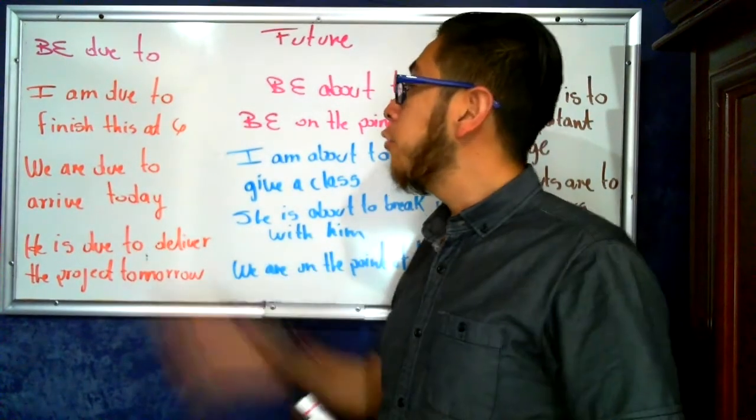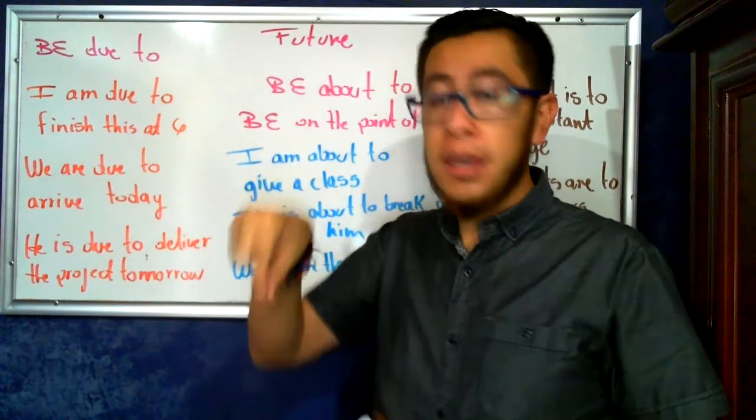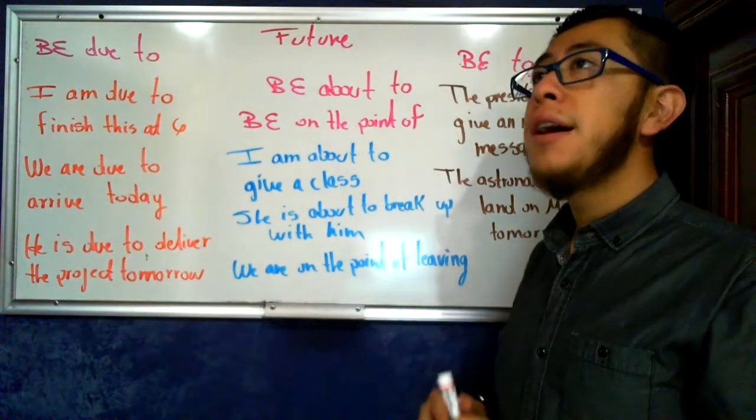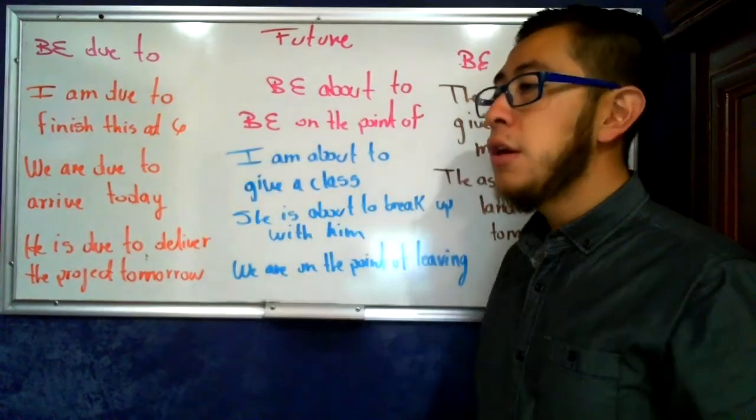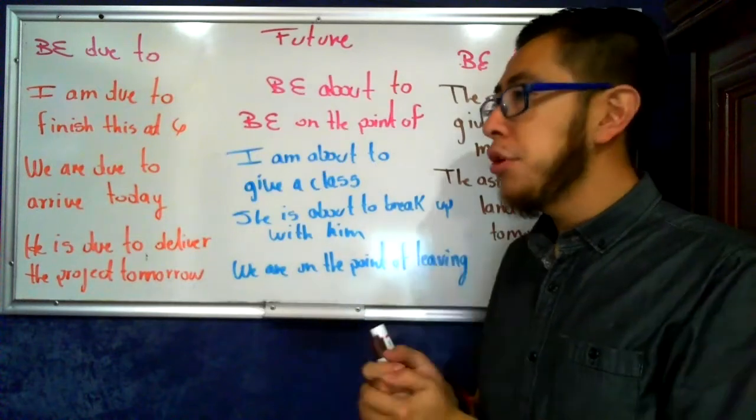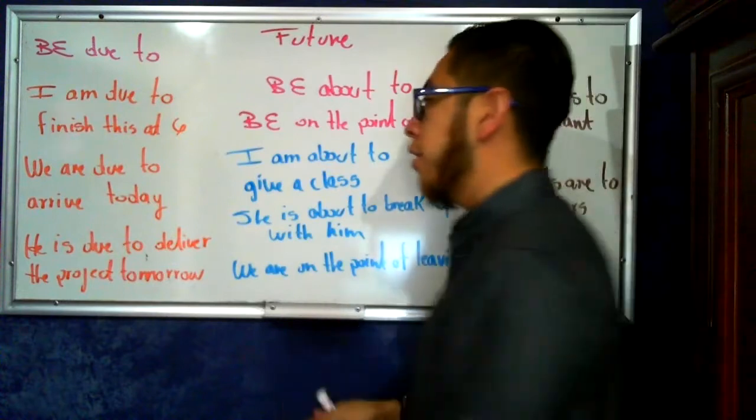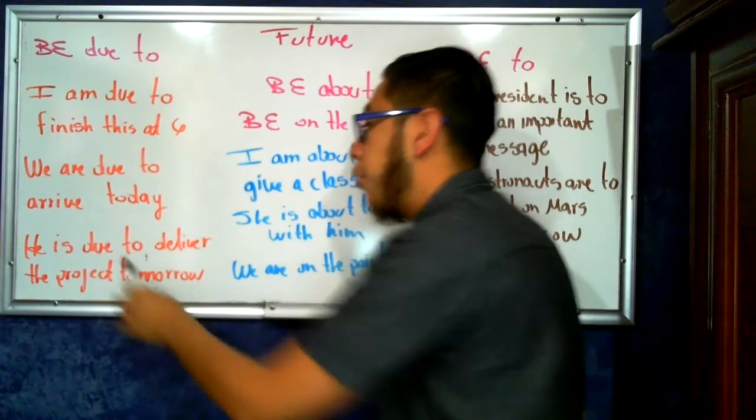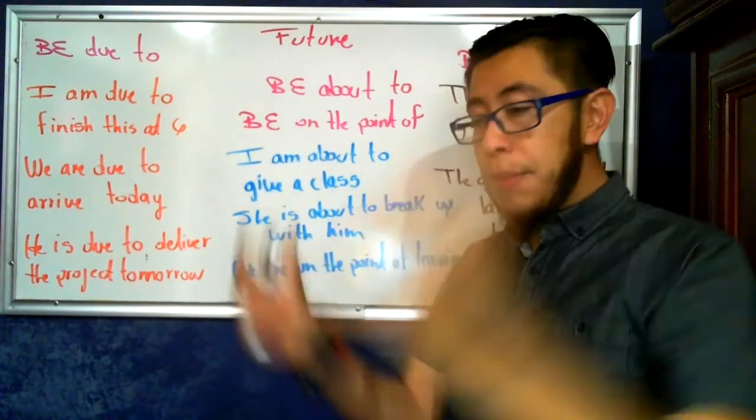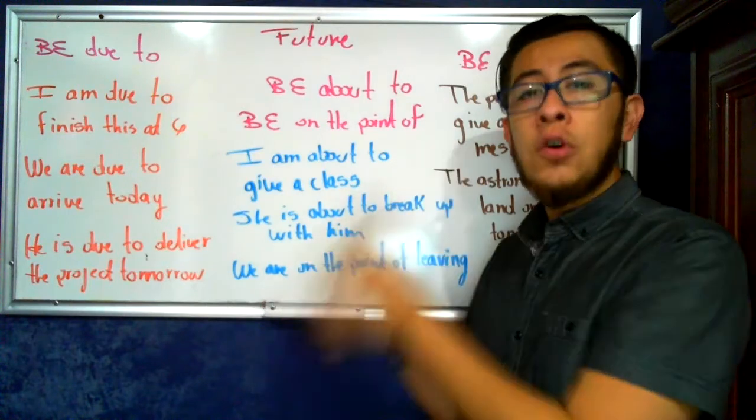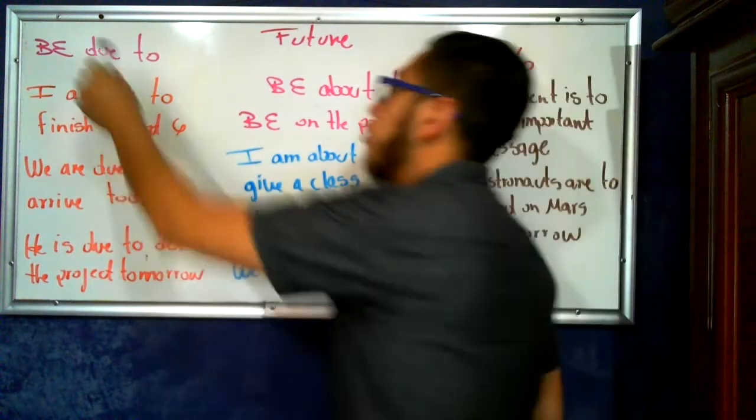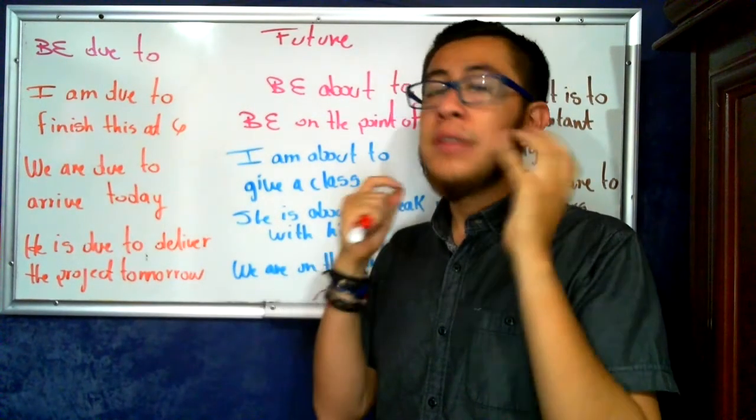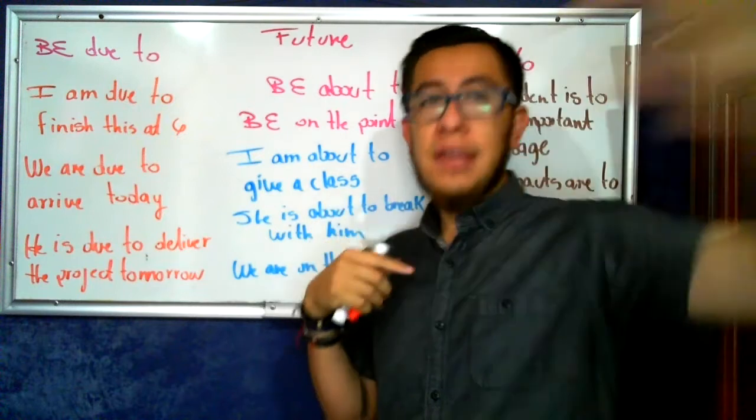So we can use due to. We are due to arrive today. Let's suppose that one student is going, well, he told me, I promise you, teacher, that I will deliver the project tomorrow. Okay. So according to his plans, according to the arrangement, he is due to deliver the project tomorrow. It says that all the plan says that tomorrow this action is going to be done.